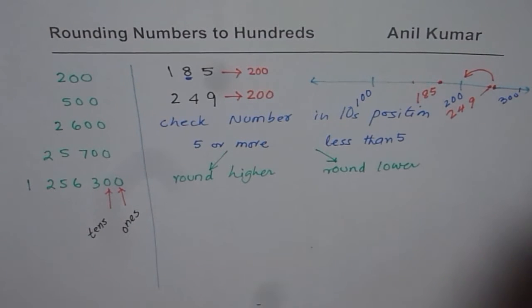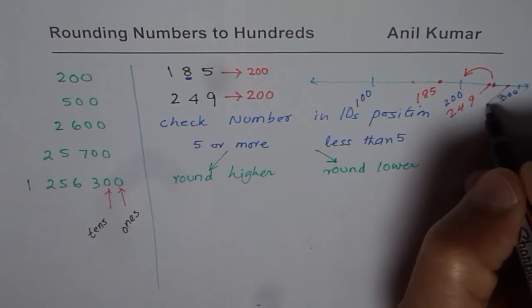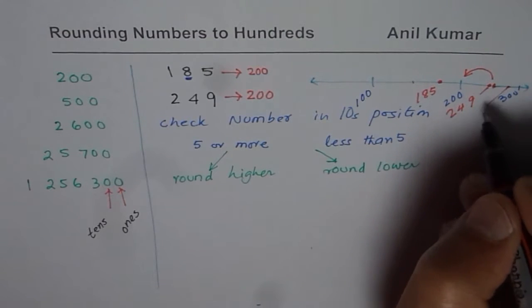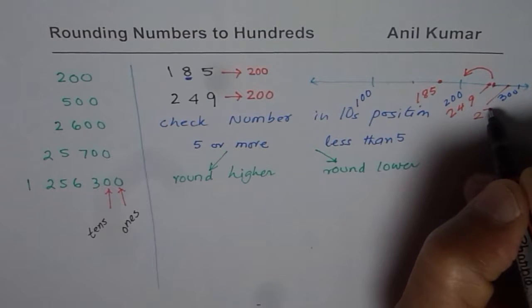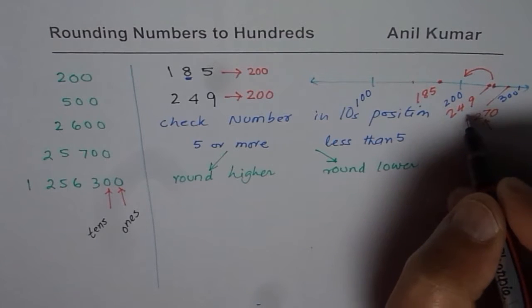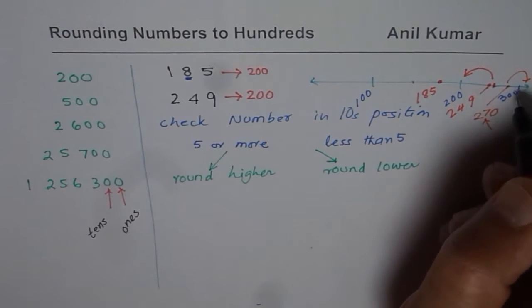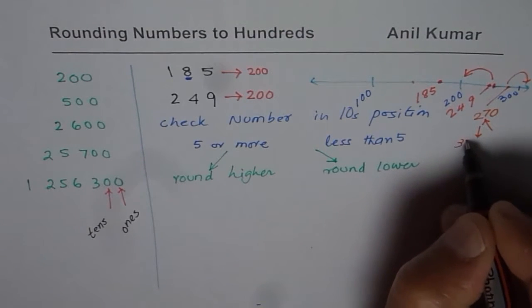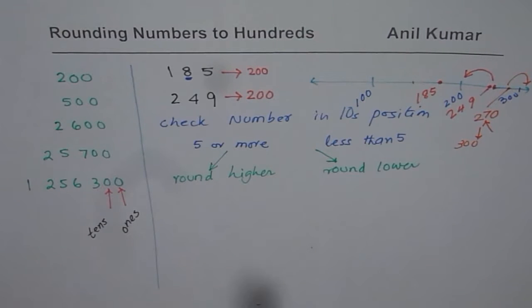If I have a number which is, for example, on the right side of 250 or even 250, let's say, let's take number 270. Now this number, tens position is 7, which is higher than 5, will round higher to 300. Do you get the idea? So that is the key rule. Now we'll adopt this key rule and do some more rounding.